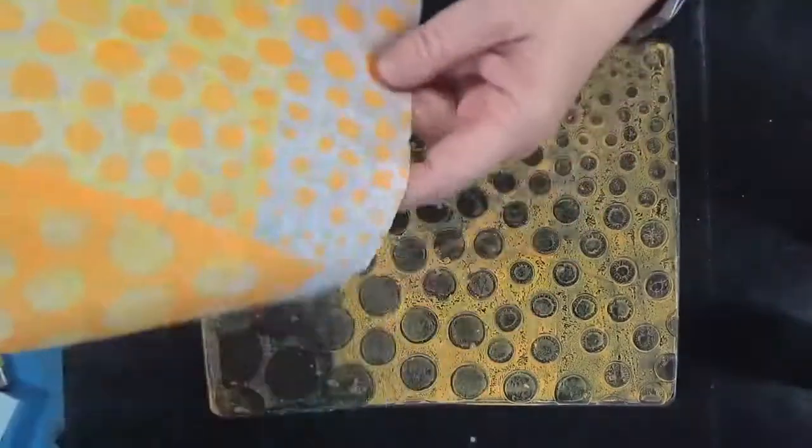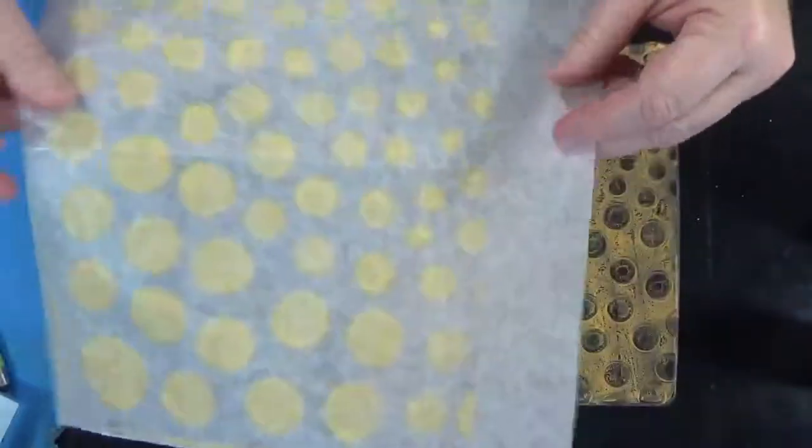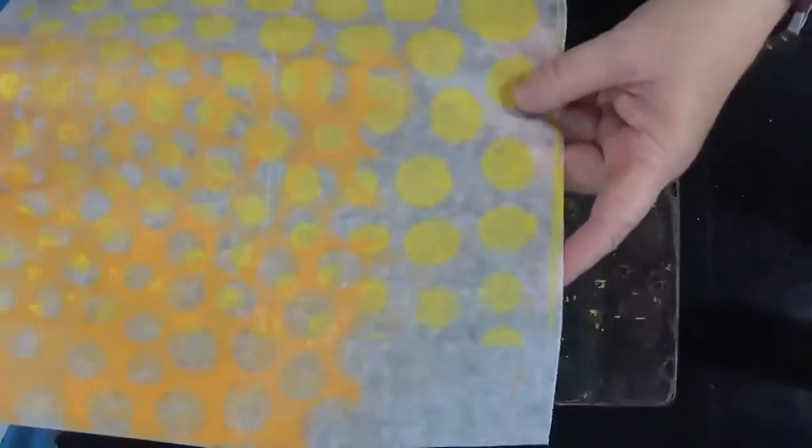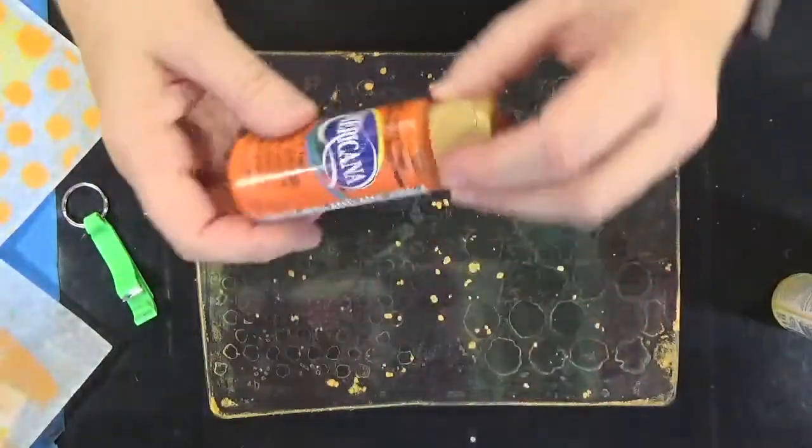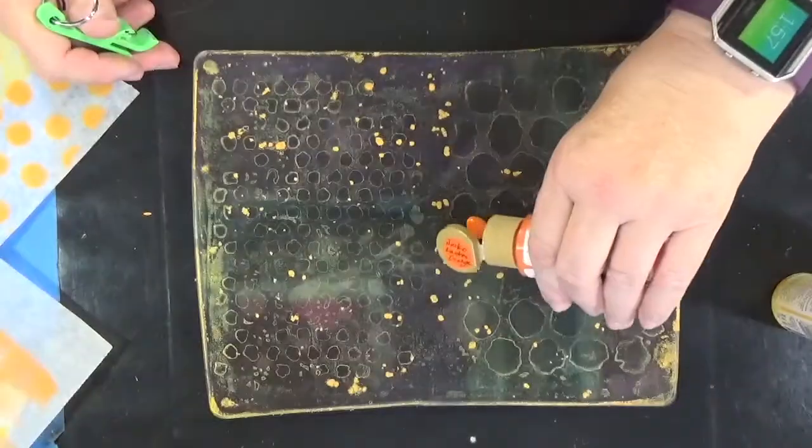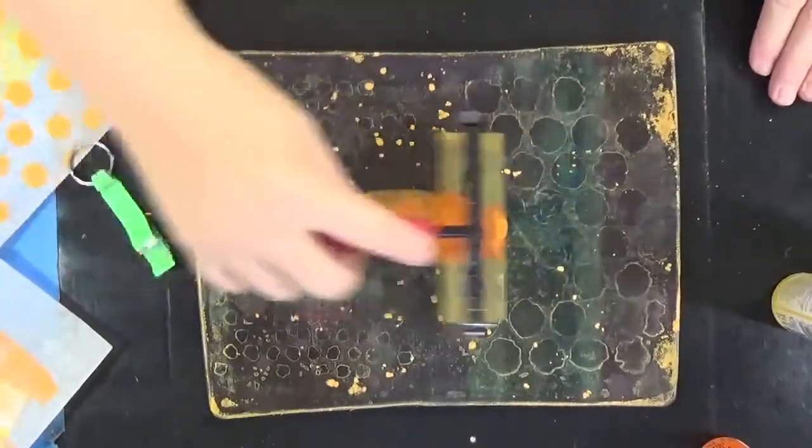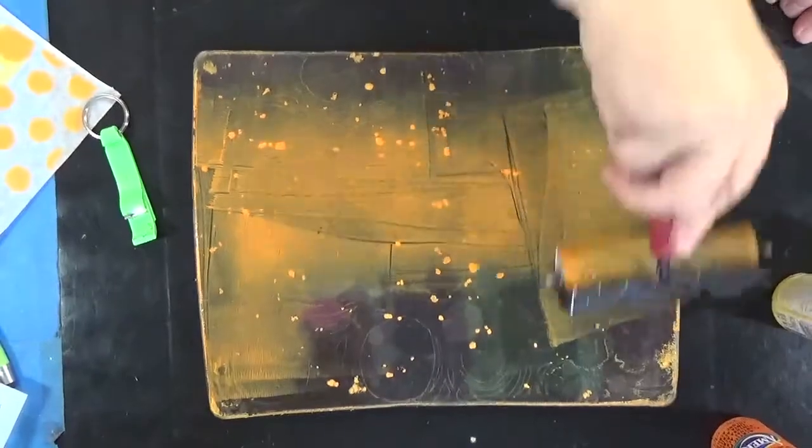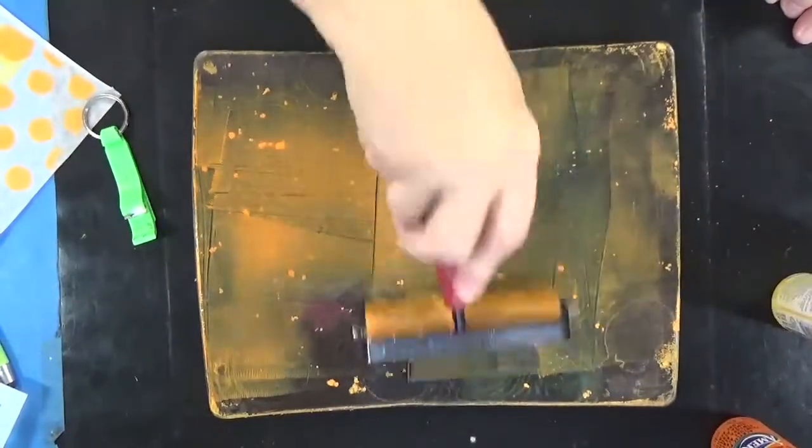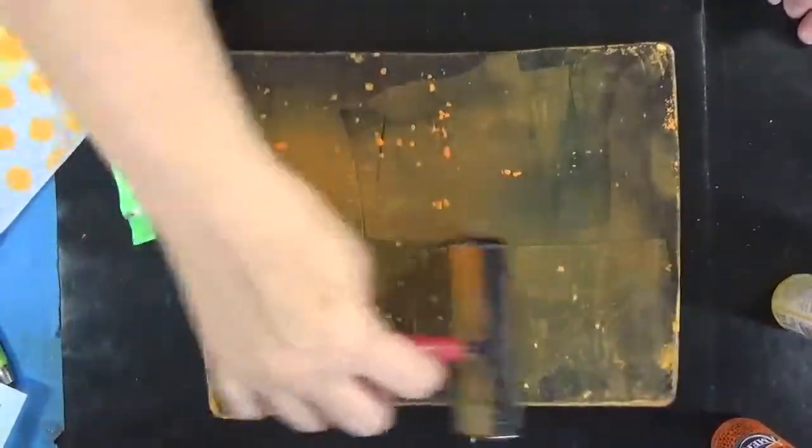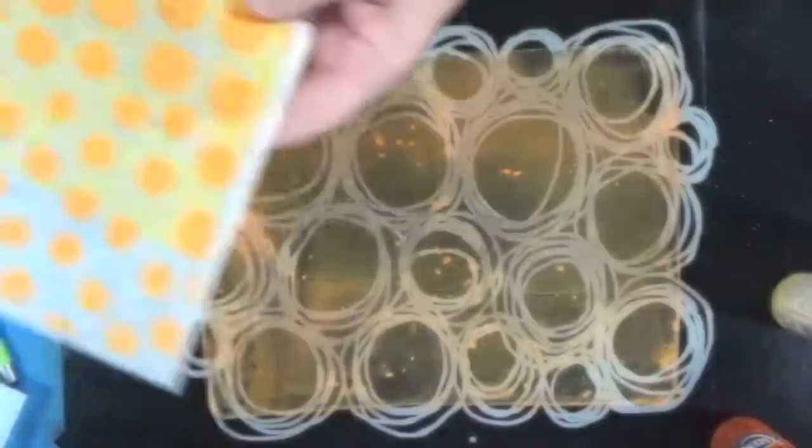So now you've seen how I use both deli paper and computer paper to print with my gel plate. Jack-o-lantern orange, which is a semi-transparent color, and when you pull this jack-o-lantern orange up, it really is lovely.